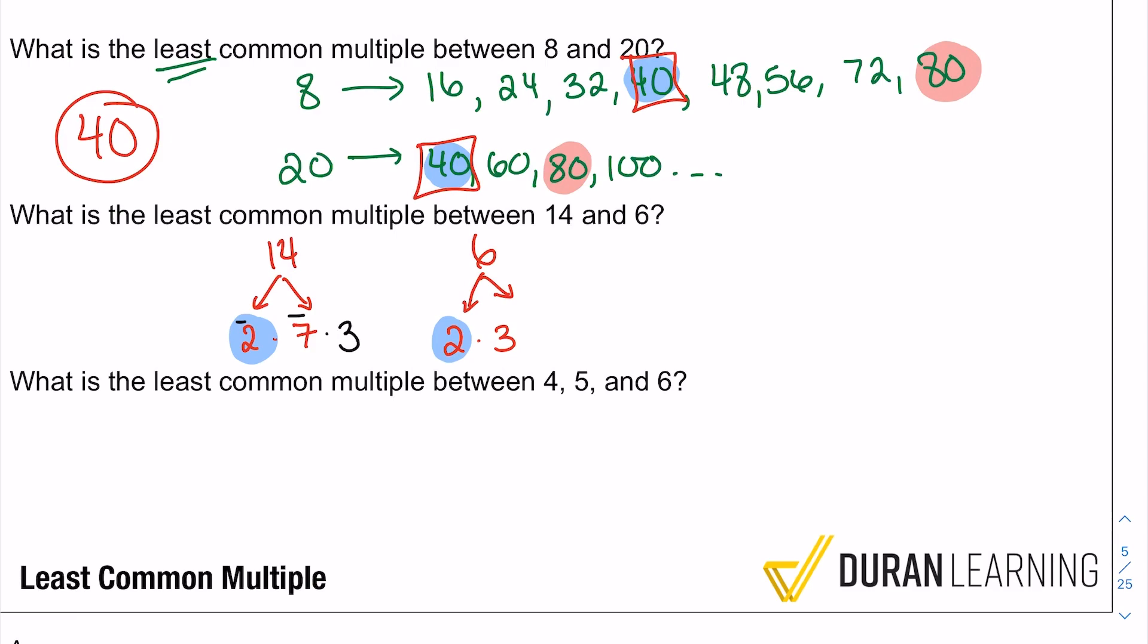Another way you could think about it with the 6 - you could say hey, what does the 14 have that 6 doesn't? Again, we have that 2 in common. It has a 3 but it doesn't have that 7 right there. So again, if we wanted to, we can multiply this by 7 here to get that least common multiple. So what's 2 times 3? That's 6. But if we multiply it by 7, that'll give us 42. 42 is the least common multiple between 14 and 6.